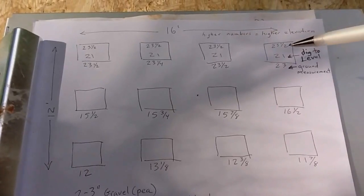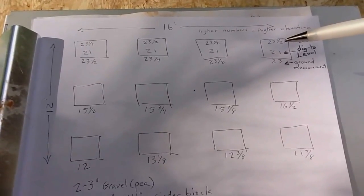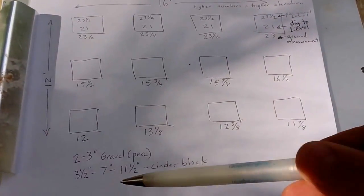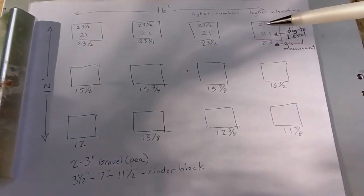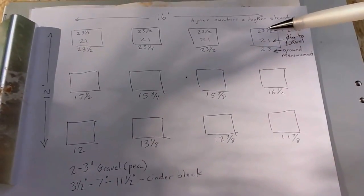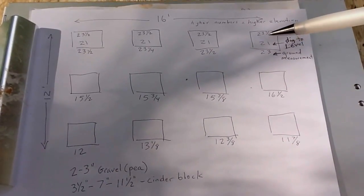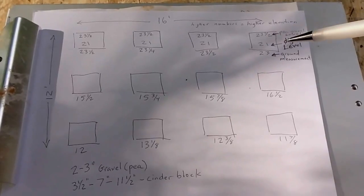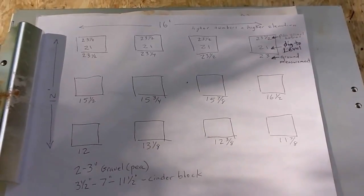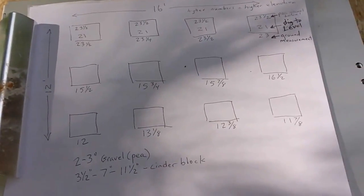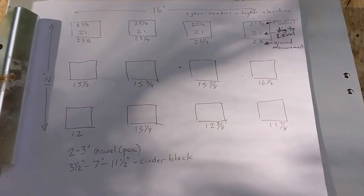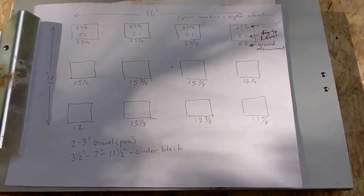The first row with the pea gravel was 23 and a half inches. Then I added a three and a half inch block onto that, so everything was 27 inches high across this first row.